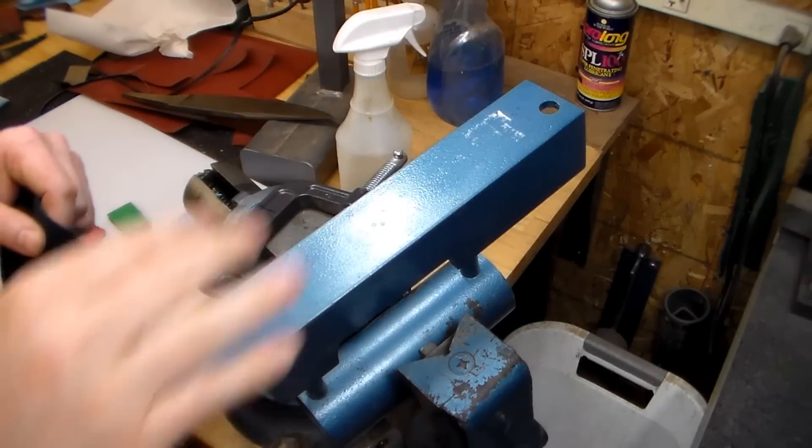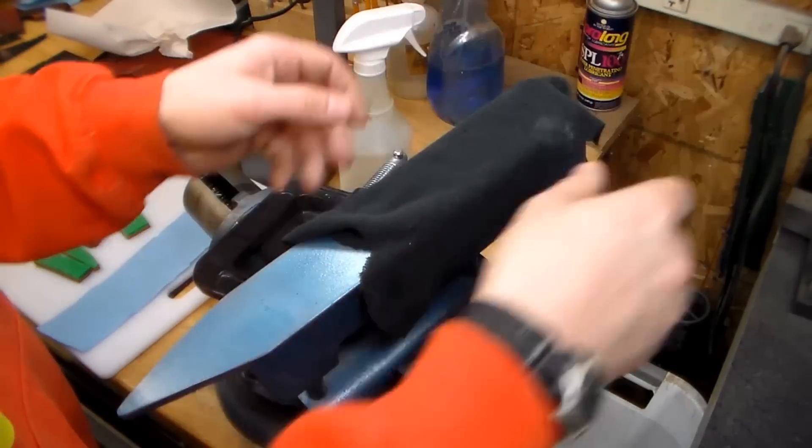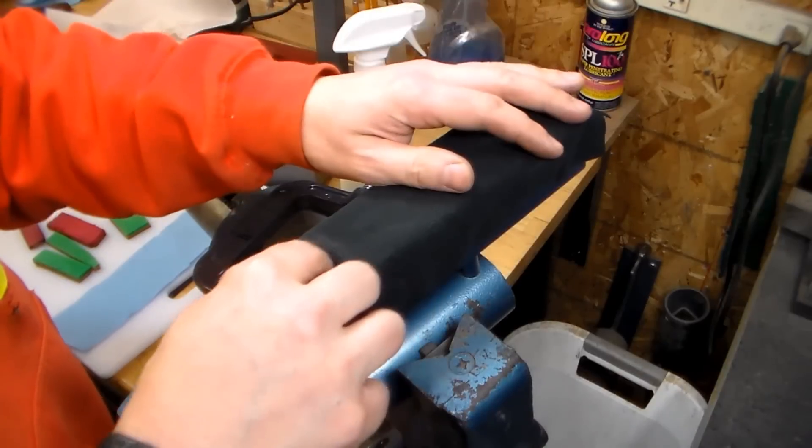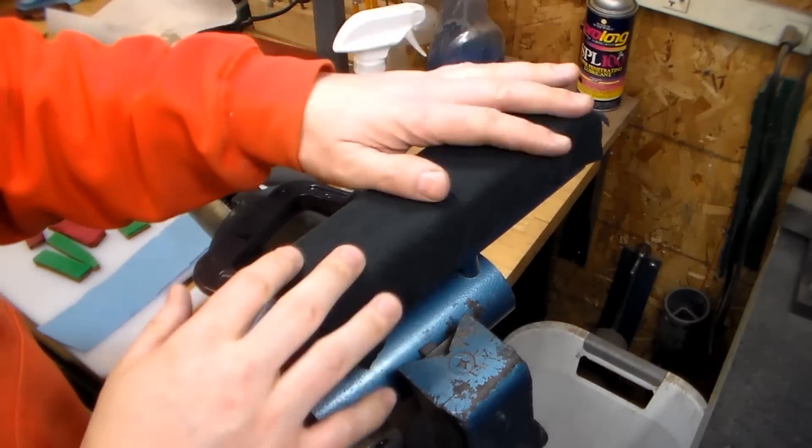Okay, so we've got a simple sanding fixture here in the vise. Just take a scrap of, this is an old part of an old t-shirt, lay that down.